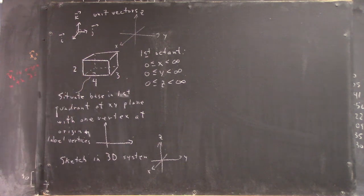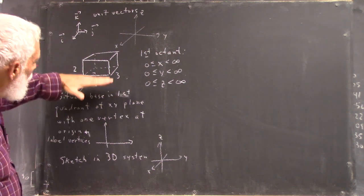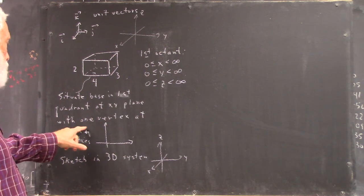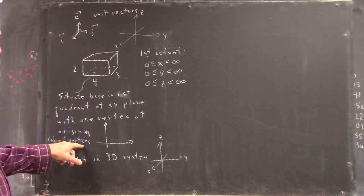Now we've got this rectangle here and what everybody should do is situate the base of this rectangle that would be on the bottom as pictured in the xy plane with one vertex at the origin and then label all the vertices.